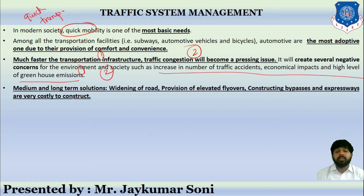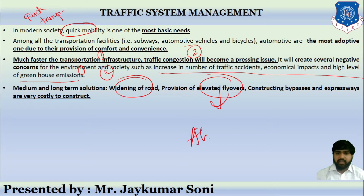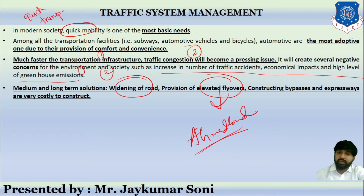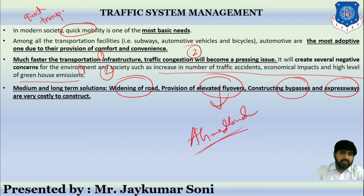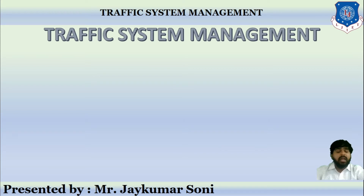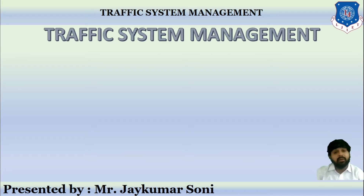Medium and long term solutions are available — such as widening the road or providing flyovers, as being done in Ahmedabad city. However, these are costly solutions. Constructing a bypass, flyover, or expressway is not a cheap or economical choice. So we need to introduce small solutions apart from widening roads and constructing new ones, which are part of medium and long term solutions. That is traffic system management — a simple and inexpensive solution.